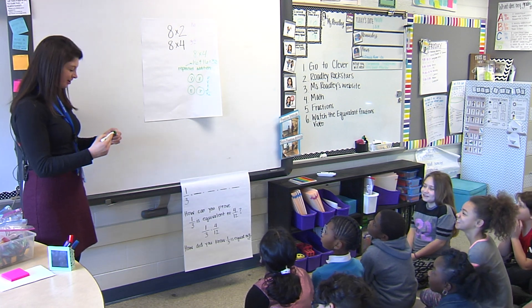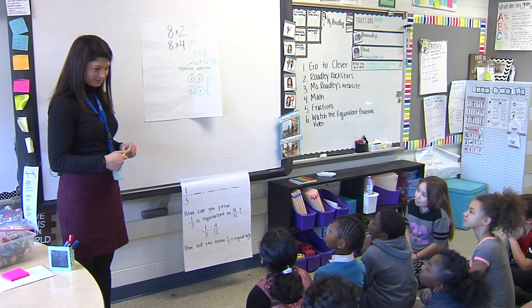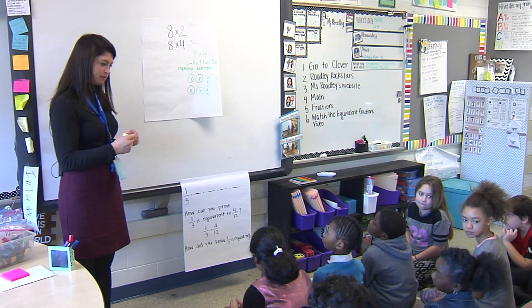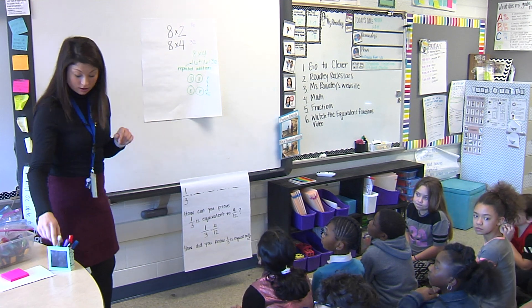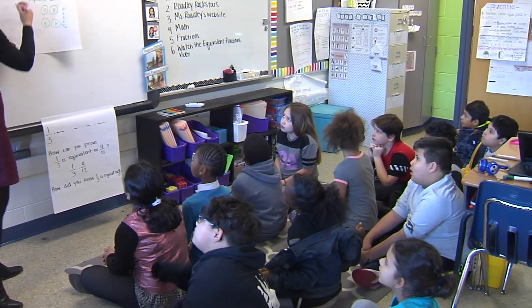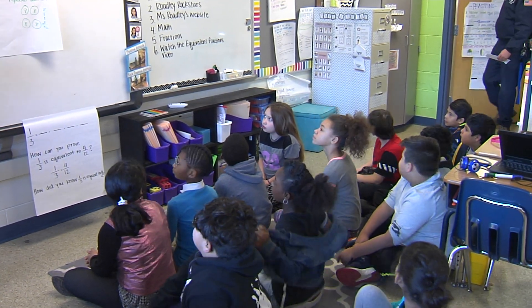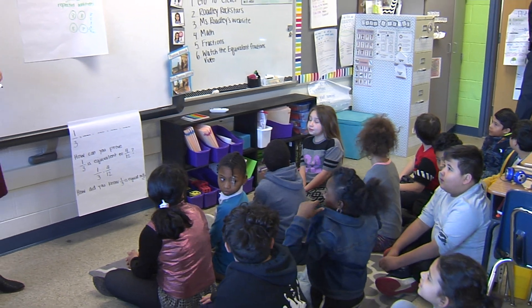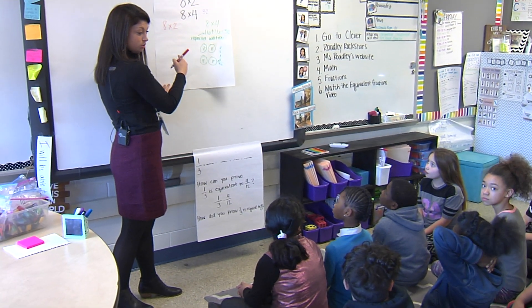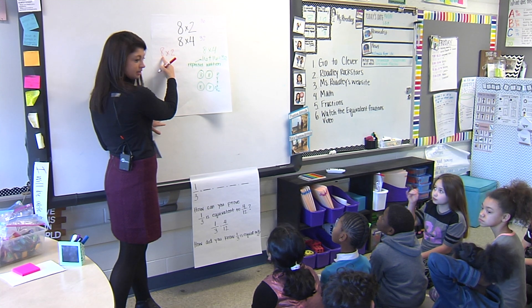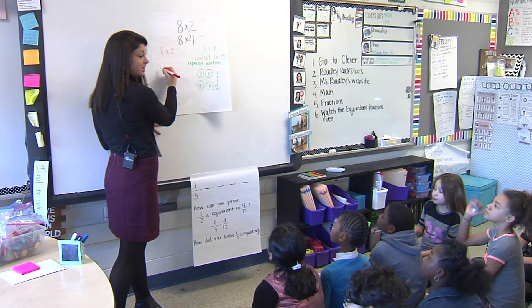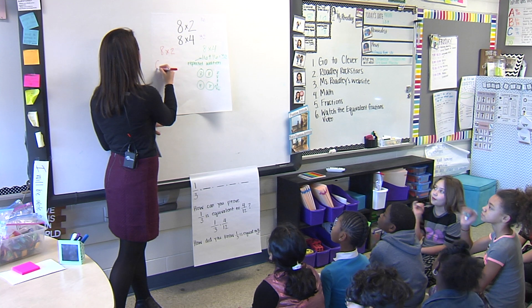Did anyone else solve it a different way — 8 times 4? Yes ma'am. So I was going to do 8 times 2. I got eight groups and put two in it. Eight groups and you put two in it. Because what does this problem say? It says 8 times 2. So I'm going to make eight groups.